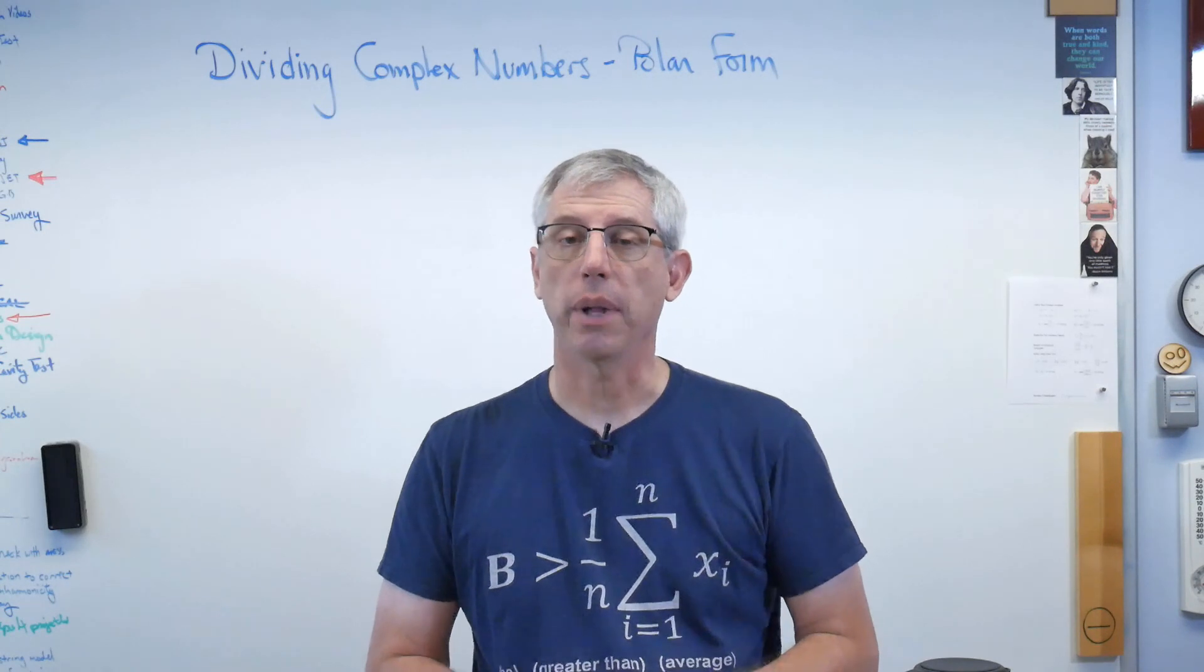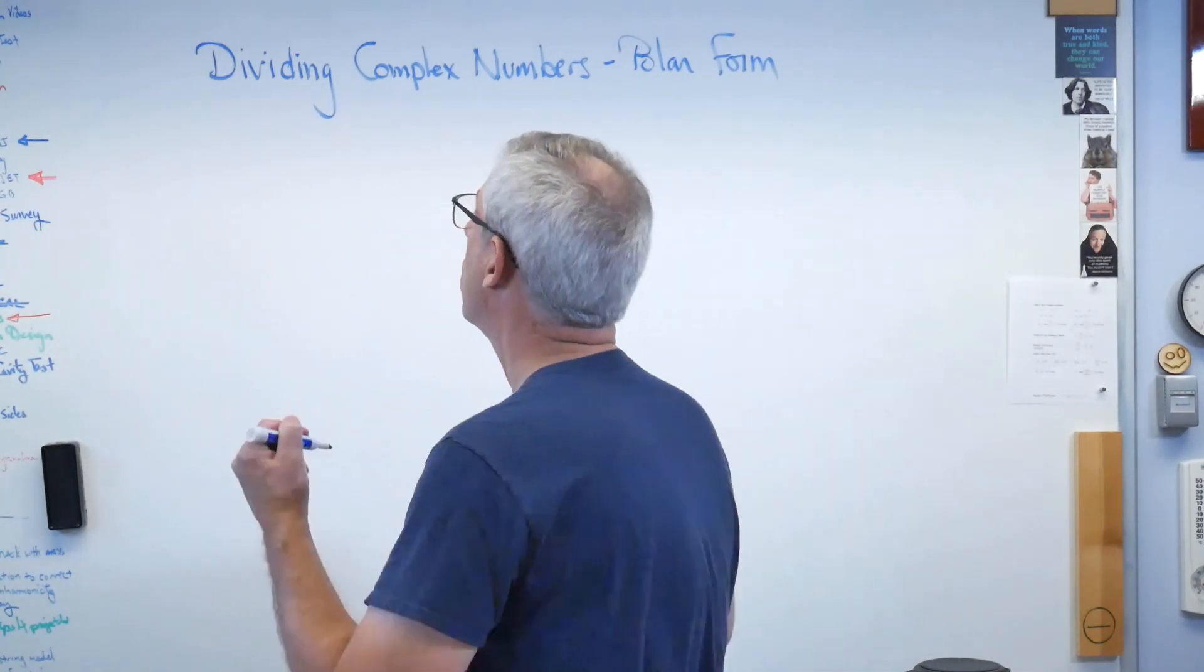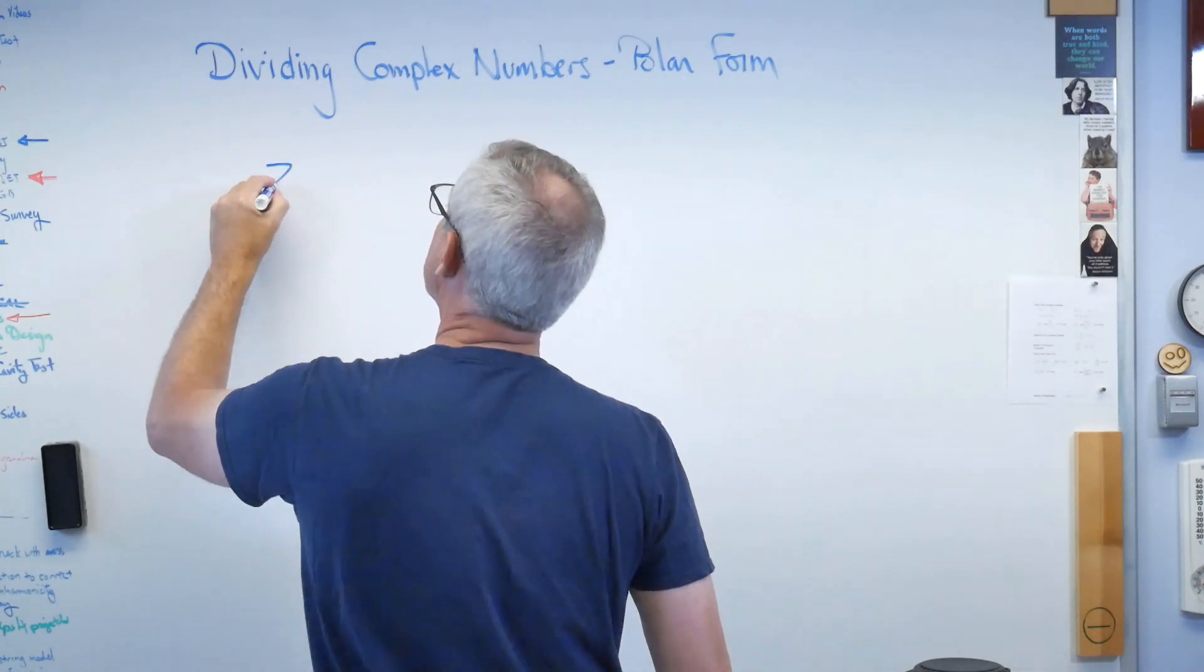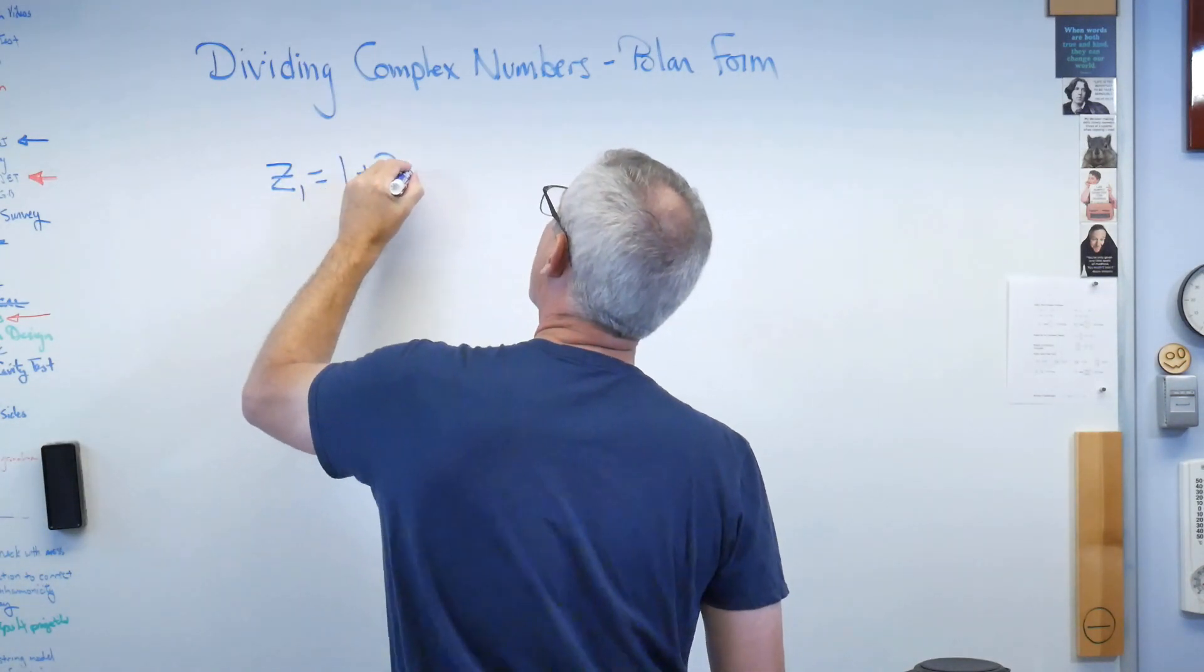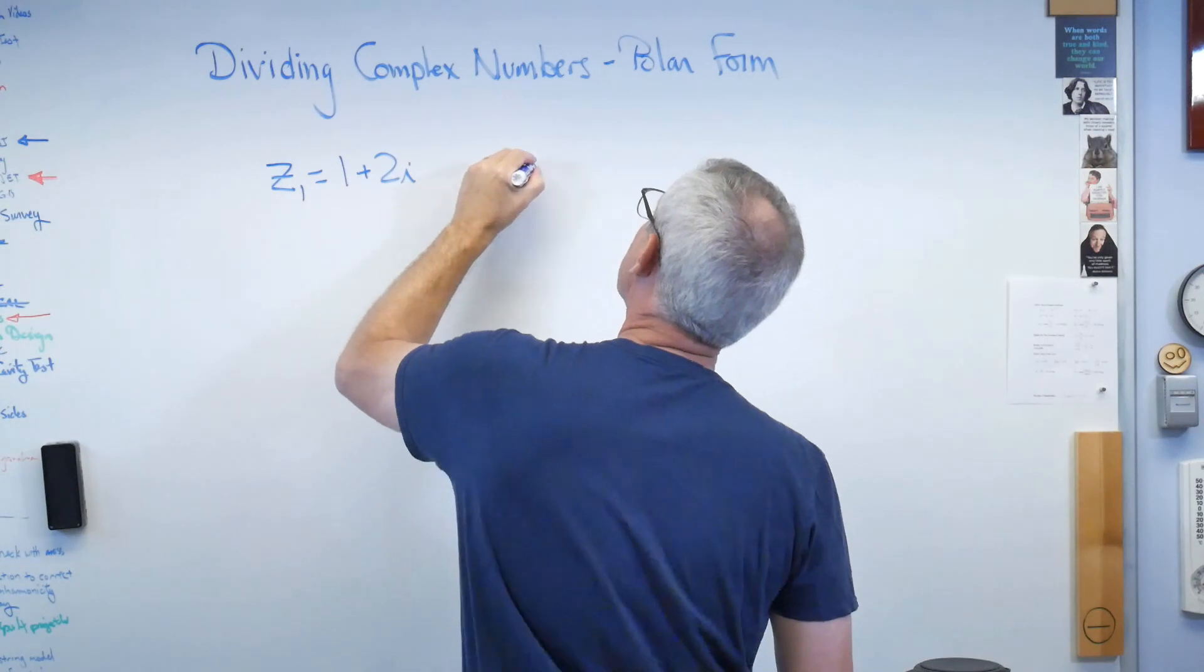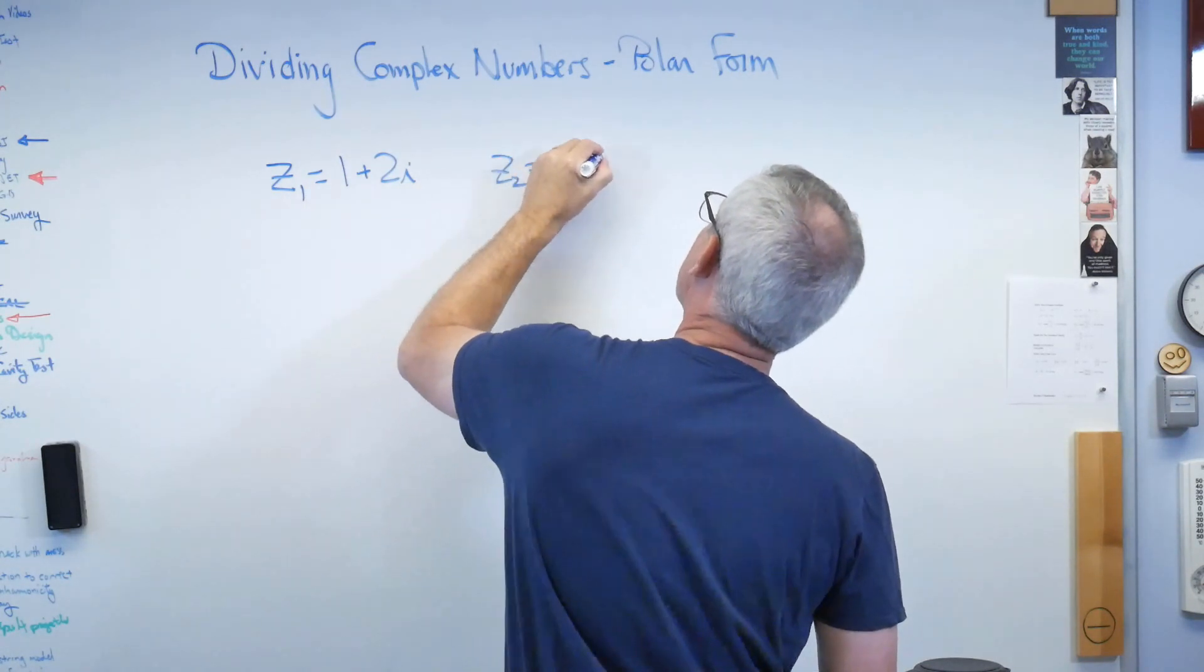To start, we need two complex numbers, so I made up two. Complex numbers are normally denoted by z, so we're going to call this one z1 equals 1 plus 2i, and z2 is going to be 3 minus i.